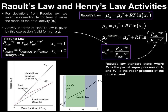We substitute this Raoult's law standard state activity into our expression: the chemical potential of the solution equals the chemical potential of pure ethanol plus RT times the natural log of the vapor pressure of ethanol in solution divided by the vapor pressure of pure ethanol. This substitution of P over P* comes from placing activity into the model to make it fit the data, using the Raoult's law standard state.